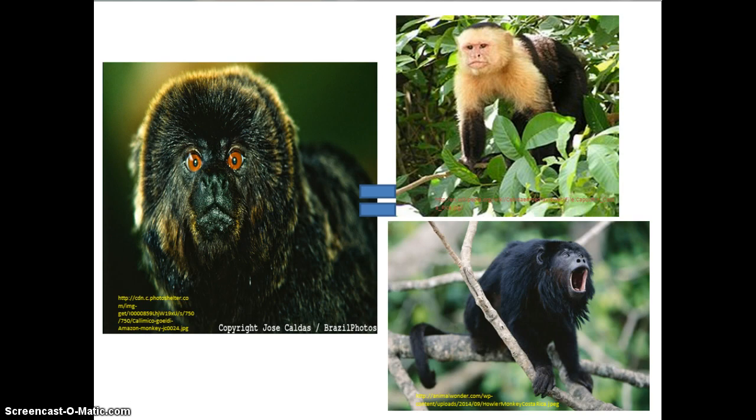In argument in favor of placing Goldie's marmoset in the Cebidae family, there are three main reasons. First, because the Calamico only has two molars, they are more similar to the Cebids. Second, the Calamico does not twin like other Callitrichids. And lastly, because historically the Calamico has been grouped within the Cebids, they should remain so for simplicity.